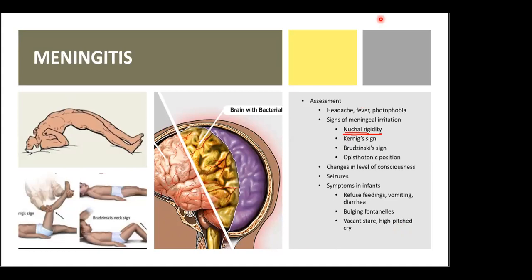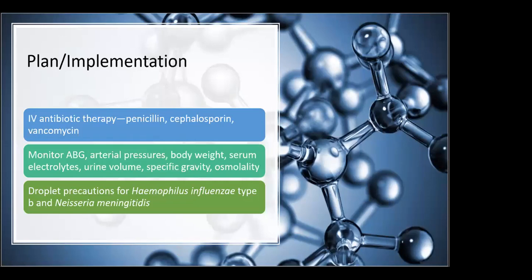Droplet precautions are used to prevent spread of pathogens passed through respiratory secretions that do not survive long in transit. These droplets are relatively large particles that cannot travel far through the air and are transmitted by coughing, sneezing, and talking. Initiate these precautions for Haemophilus influenzae type B and Neisseria meningitidis.